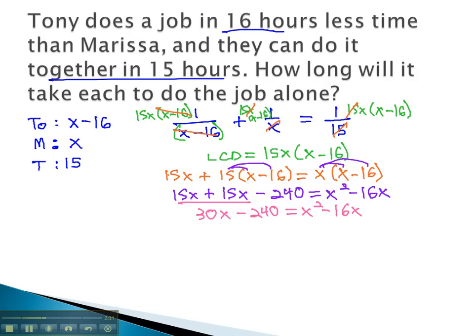We can now solve this equation by either completing the square, using the quadratic formula, or factoring. While factoring is preferable in most cases because it's quicker, the fact that 240 is a larger number might make this difficult to factor. So let's solve this equation by completing the square instead. Completing the square asks us to separate the variables and the numbers first. So let's subtract 30x from both sides, giving us negative 240 equals x squared minus 46x.